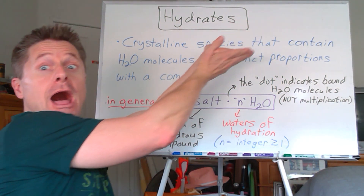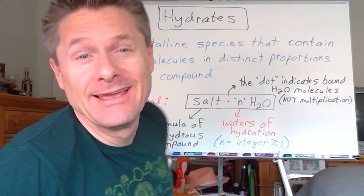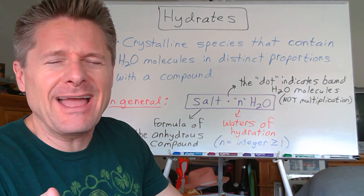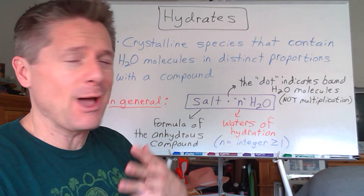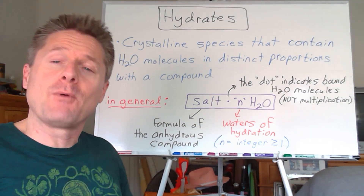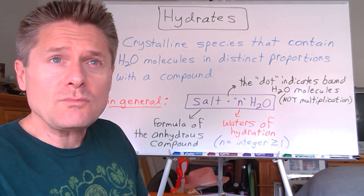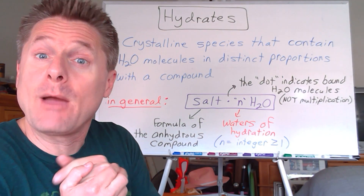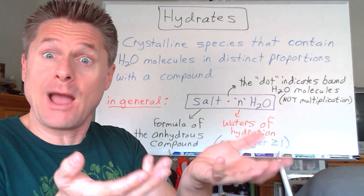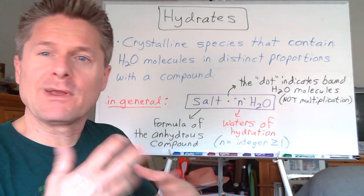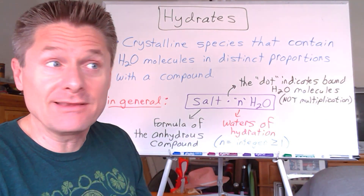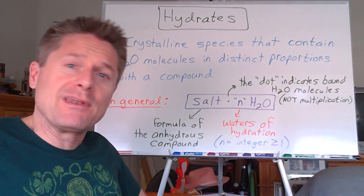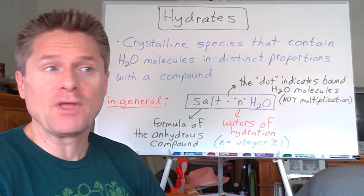Good morning — we're looking at hydrates today. This topic probably belongs in the nomenclature section, but we do a lab where we take percent composition of a hydrated compound. We heat it to drive the water off, measure the mass decrease — that's the mass of the water — divide by the mass of the original hydrated compound, times 100, and you get the mass percent. It's a simple but great application of percent mass.